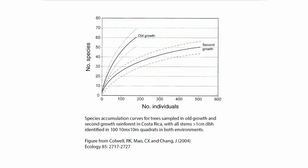Here are some examples of real species accumulation curves. These are from trees sampled in old-growth and second-growth forest in Costa Rica. The people who did the survey identified every tree with a stem more than one centimeter diameter breast height in 100 ten-by-ten meter quadrats in both old-growth and second-growth forest. You can see that the old-growth species accumulation curve is much steeper than the second-growth forest species accumulation curve. So as you sample individuals, you get more new species in the old-growth forest than in the second-growth forest.